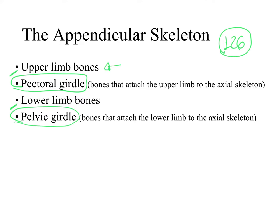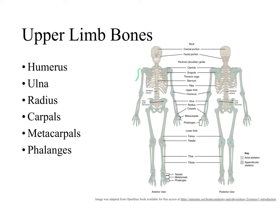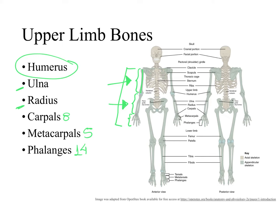The upper limb is divided into three main regions: the arm, the forearm, and the hand. In anatomy class, 'arm' refers specifically to the anatomical arm; for the entire upper limb, we say 'upper limb.' The arm has only one bone, the humerus. The forearm has two bones, the ulna and radius. The hand has eight carpal bones, five metacarpal bones, and 14 phalanges. We will now go over the bone features found in each of these upper limb bones.